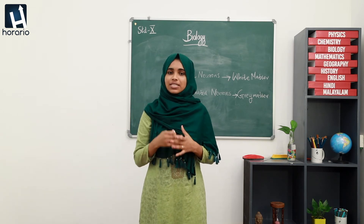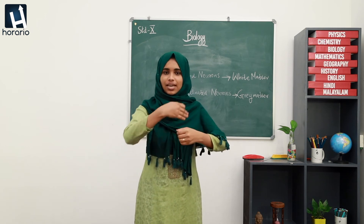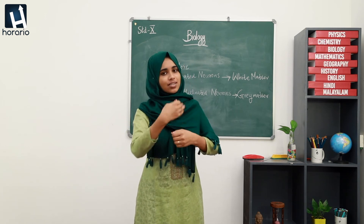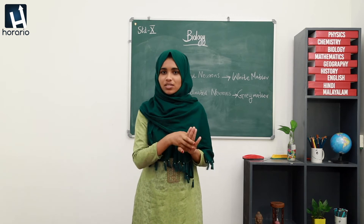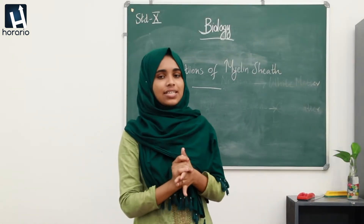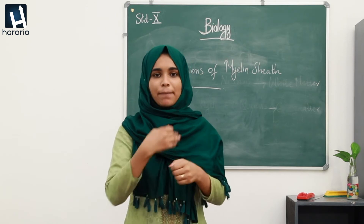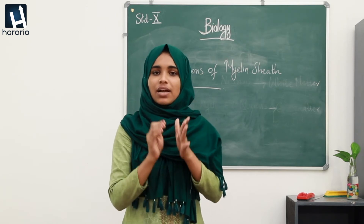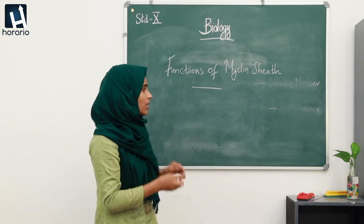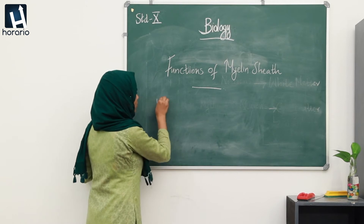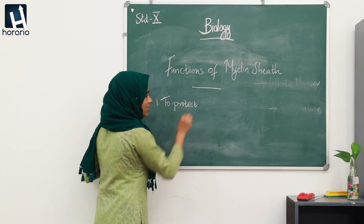Now we are going to discuss the functions of myelin sheath. The myelin sheath is the repeated encircling around the axon, and we have to study four important functions. The main function of the myelin sheath is, number one, to protect the axon from external injuries, because it acts as a membrane.